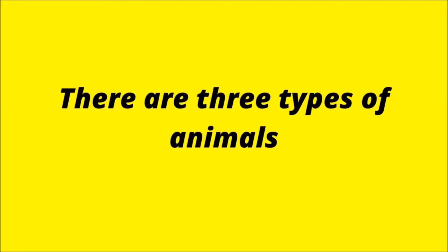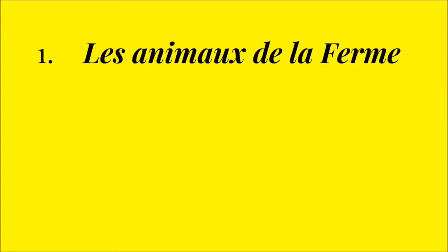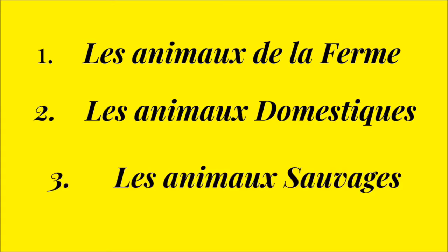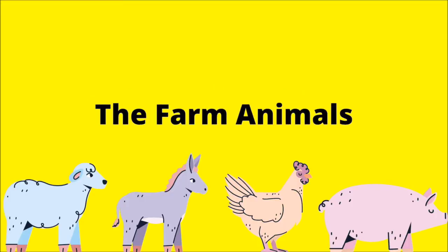There are three types of animals. Les animaux de la ferme. Les animaux domestiques. Les animaux de la savane. Let's begin with the farm animals.